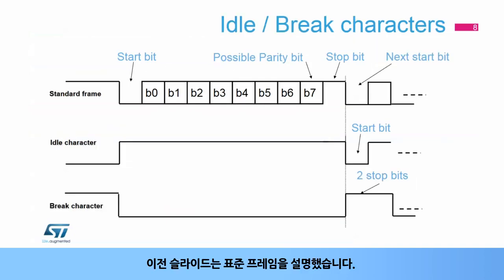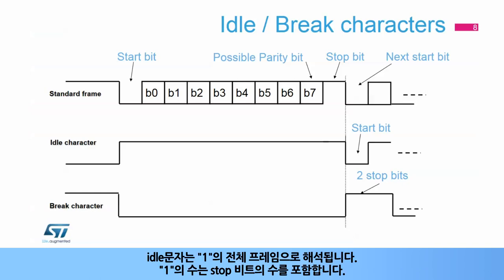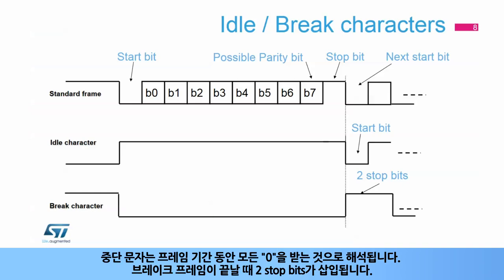The previous slide described a standard frame. This slide shows an example of an 8-bit data frame configured with one stop bit. An idle character is interpreted as an entire frame of ones; the number of ones will include the number of stop bits as well. A break character is interpreted as receiving all zeros for a frame period. At the end of the break frame, two stop bits are inserted.